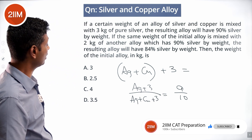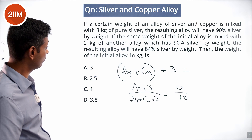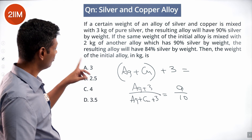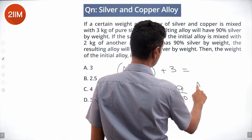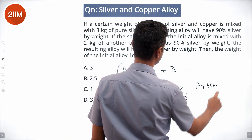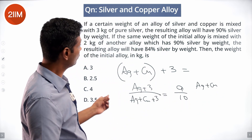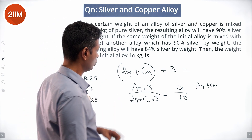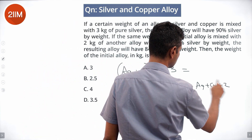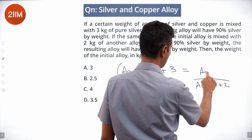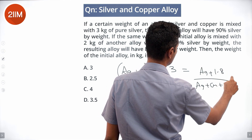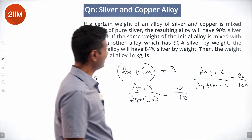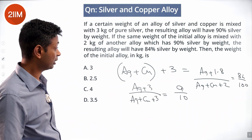The same weight of the initial alloy is mixed with 2 kg of another alloy which has 80% silver by weight. The resulting alloy will have 84% silver by weight. So Ag plus Cu plus 2 kg of the other alloy, which contributes Ag plus 1.8, divided by the total weight, equals 0.84, i.e., 84% silver by weight.